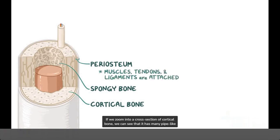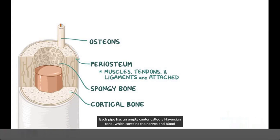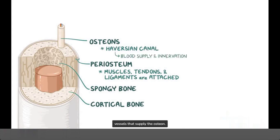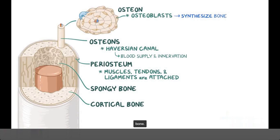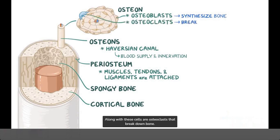If we zoom into a cross-section of cortical bone, we can see that it has many pipe-like structures called osteons running through the length of the bone. Each pipe has an empty center called a Haversian canal, which contains the nerves and blood vessels that supply the osteon. At the outer border of the osteon is a ring of cells called osteoblasts, which synthesize bone, along with osteoclasts that break down bone.